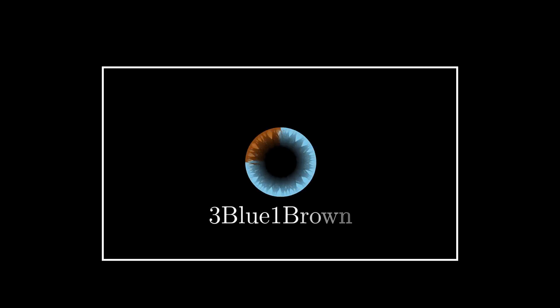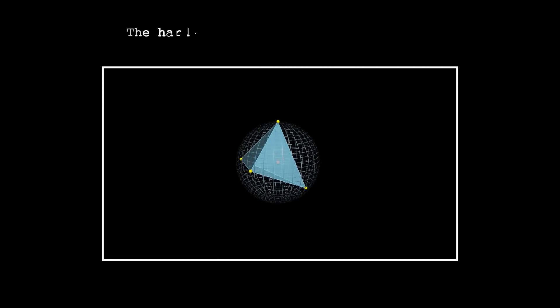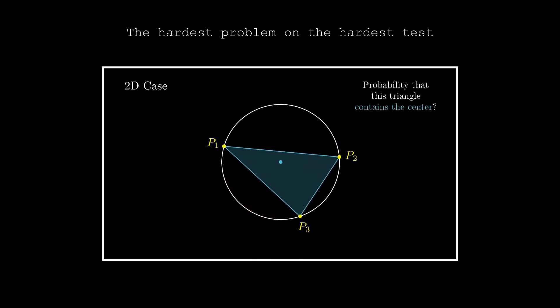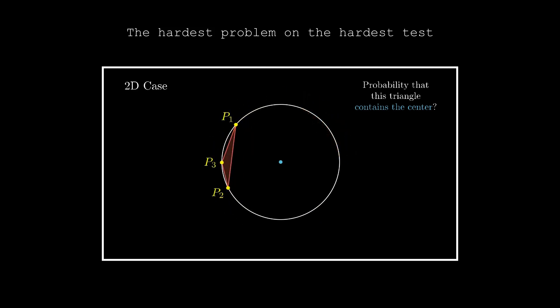Many of you might have already seen that video titled The Hardest Problem on the Hardest Test. For those who haven't, let me introduce a simpler version of it. If we randomly select three points on a circle, what are the chances the circle's center lies inside the triangle formed by these points?